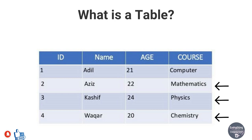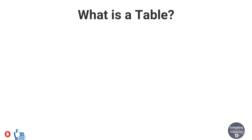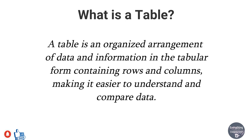The data of each student is known as a row or record. Each record holds the total data for a specific student. We can make as many tables as possible with different combinations of data. A table is an organized arrangement of data and information in tabular form containing rows and columns, making it easier to understand and compare data.